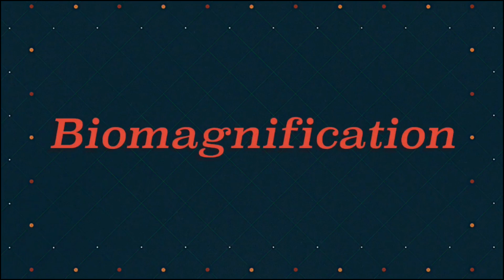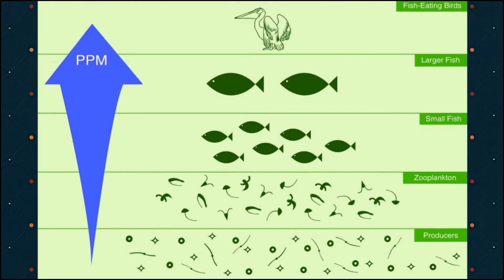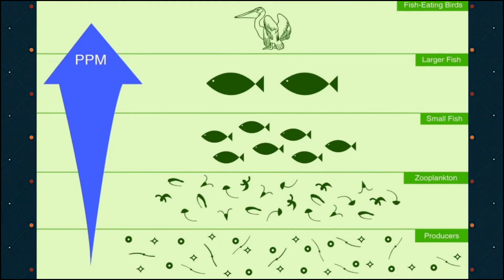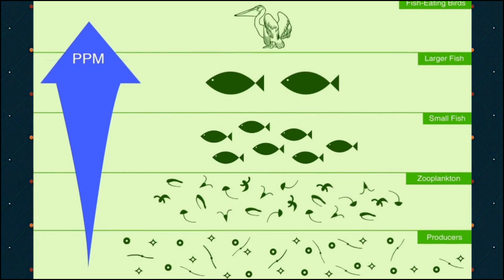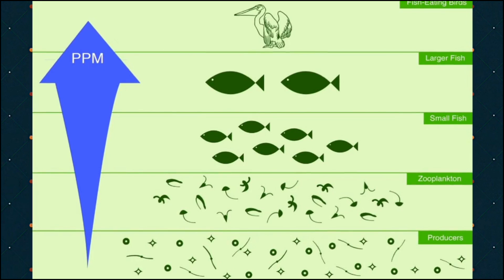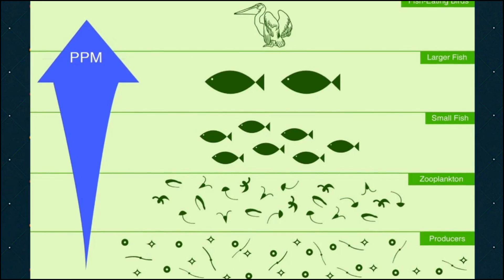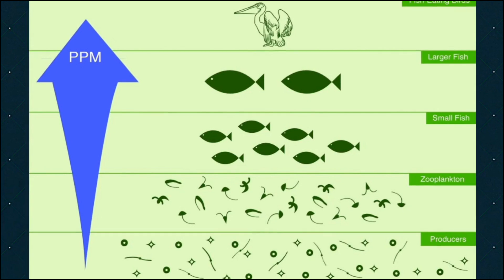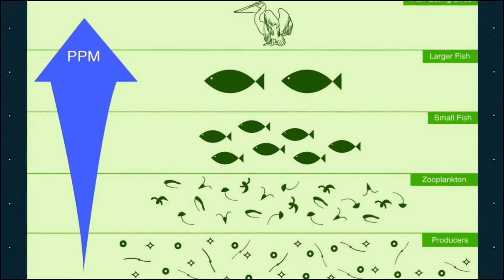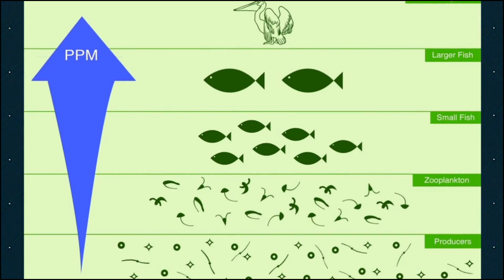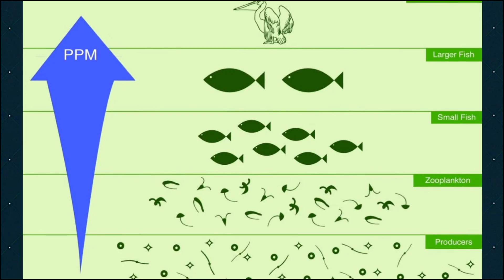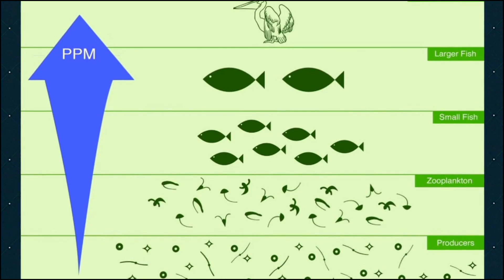This was caused by a process called biological magnification, or biomagnification. Biomagnification is simply the increase in the concentration of a chemical as it moves up the food chain in the tissues of different organisms. At the bottom of the food chain there is very little DDT, but as organisms eat other organisms it accumulates in their tissues and grows as it goes up the food chain.